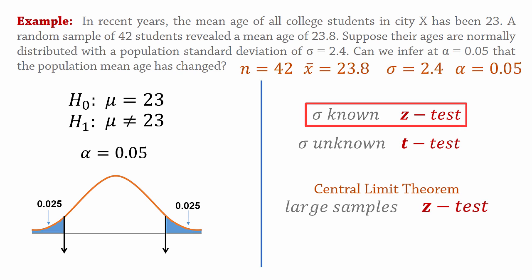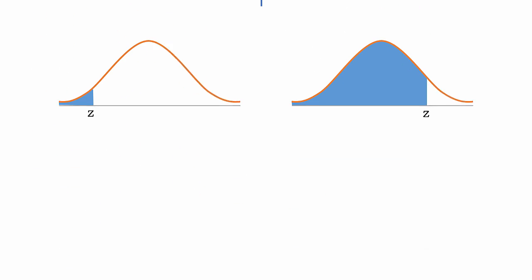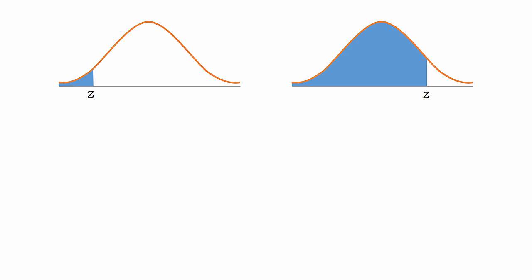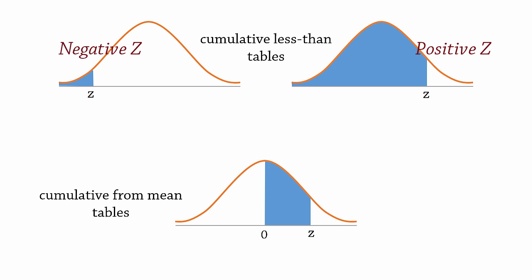We now find z-critical values that define the critical or rejection region using the standard normal table. The two commonly used z-tables are the cumulative less-than tables with negative and positive values, and the cumulative from mean tables.